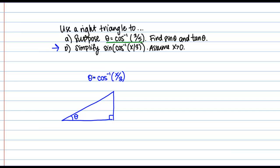Or in other words I want to draw an angle theta such that the cosine is X over 3. So we just did something like this right, cosine is the adjacent over the hypotenuse, so then I can call my adjacent side X and my hypotenuse 3.